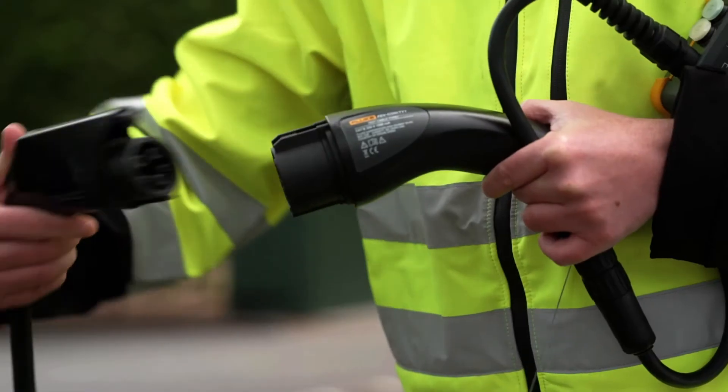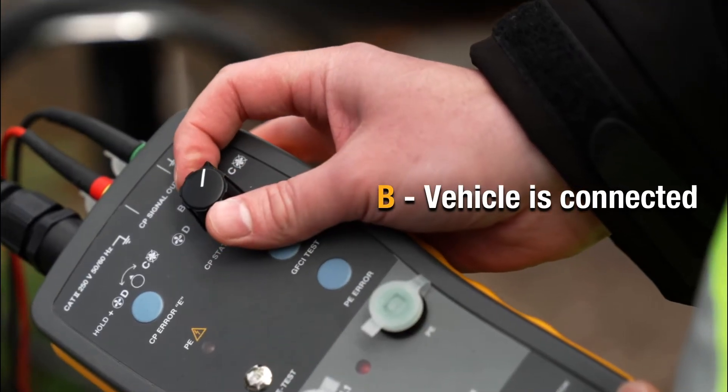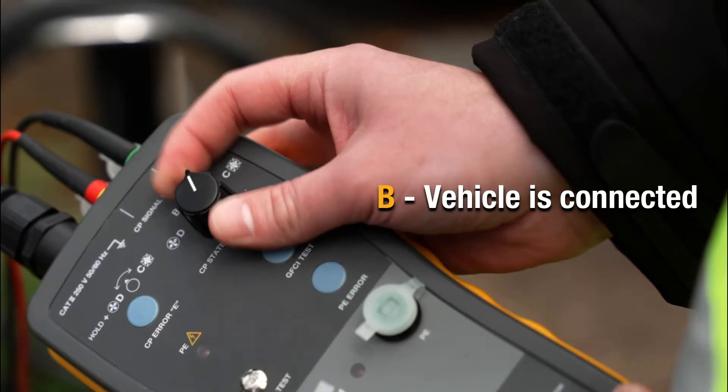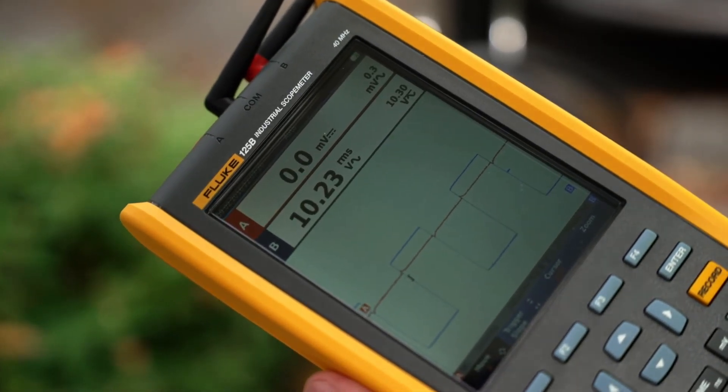Connect the adapter cable to the charging station and then turn the CP switch to the B position to test the state where the vehicle is connected. You should see a voltage measure of negative 12 volts to positive 9 volts and frequency of 1 kHz.